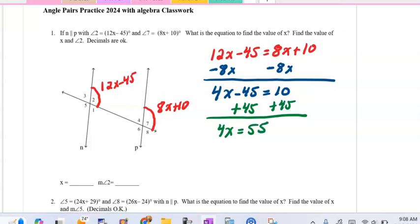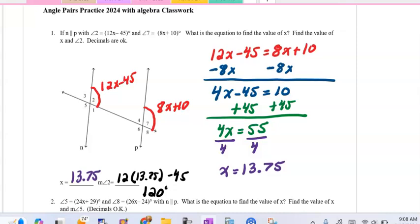You will get decimals for this particular worksheet, so you're going to divide by 4. You'll get x to be 13.75. To get angle 2, we're going to plug that in or substitute. So 12 times 13.75 minus 45 will get an answer of 120 degrees.